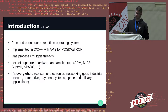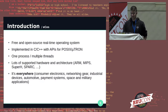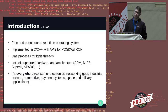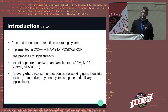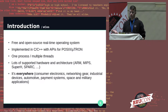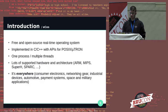Let's start by defining what ECOS is. It's a free and open source real-time operating system, mostly implemented in C and C++, but sometimes in pure assembly. It's built with a one-process multiple-threads architecture. And speaking of architecture, it supports a lot of them — ARM, MIPS, SuperH, SPARC — they're all supported.